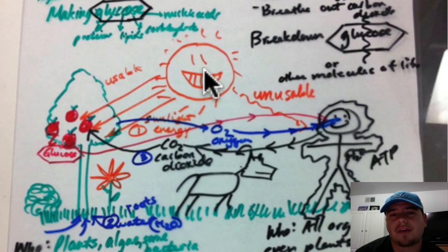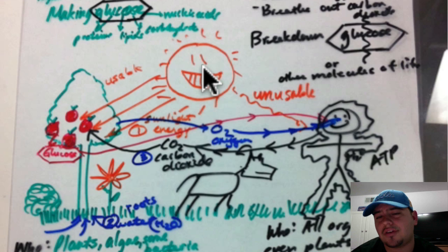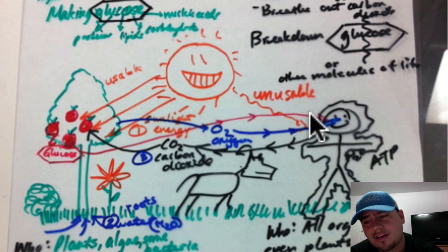So we start with a diagram here. We have sunlight. Now the sun energy is unusable. It can give you a nice tan. It can help your skin make vitamin D. And it can even cheer you up or give you some heat energy. But it doesn't do anything more than that. It doesn't give you direct food energy or chemical energy.